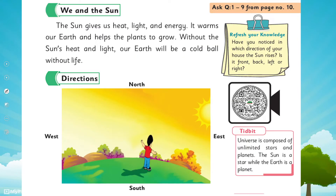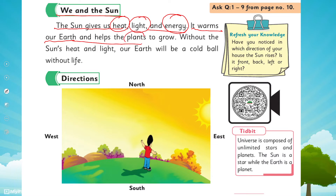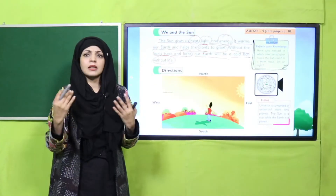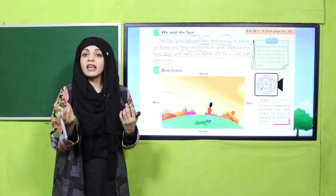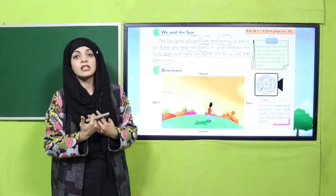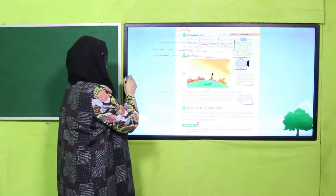Let's start the reading. 'We and the Sun: The Sun gives us heat, light, and energy. It warms our Earth and helps the plants to grow.' We have already read about this — the Sun gives us heat, light, and energy. It warms our planet and without the Sun, life cannot exist. Now we move forward to the four directions.